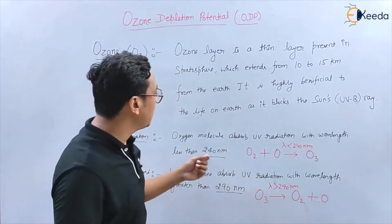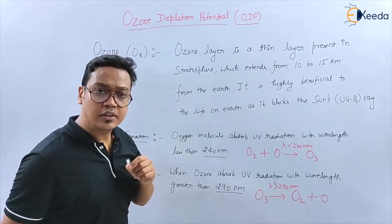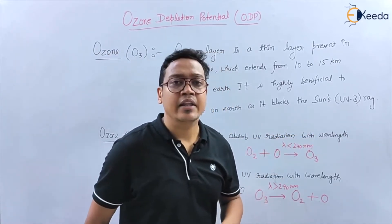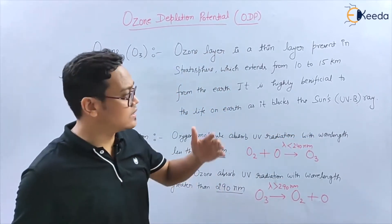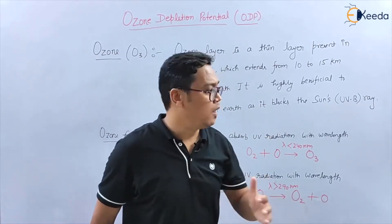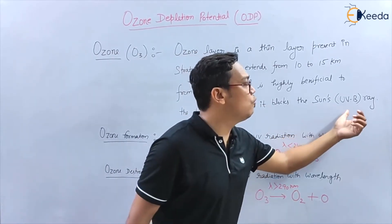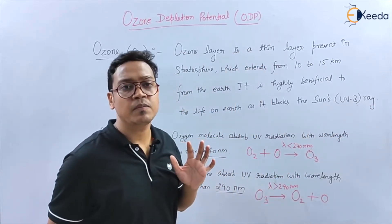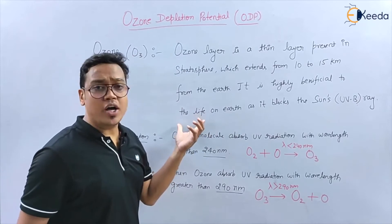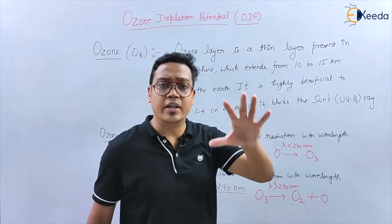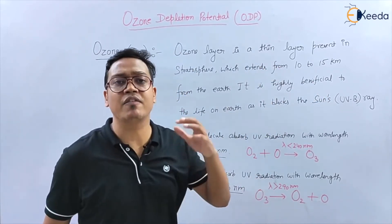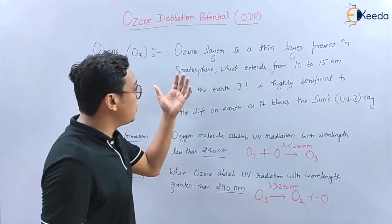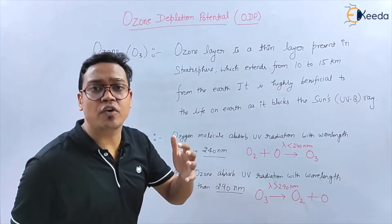The ozone layer is highly beneficial to life on Earth, and it blocks the Sun's UV-B radiation. There are ultraviolet radiation types A, B, and C. The ozone layer blocks UV type B. It is beneficial because if UV-B radiation reaches the Earth, it causes skin cancer. So the ozone layer is very beneficial in blocking UV-B radiation.